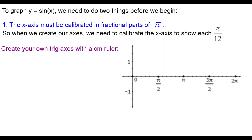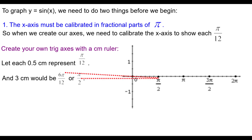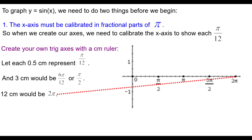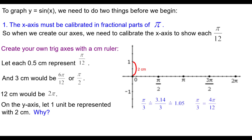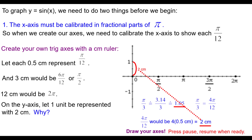Create your own trig axes with a centimeter ruler. Let each half centimeter represent π/12. That means 3 centimeters would be 6π/12, or π/2, because 6 times 0.5 is 3. And 12 centimeters would be 2π. On the y-axis, let one unit be represented by 2 centimeters — that way the units will be square. Go ahead and draw your axes. Press pause and resume when you're ready.